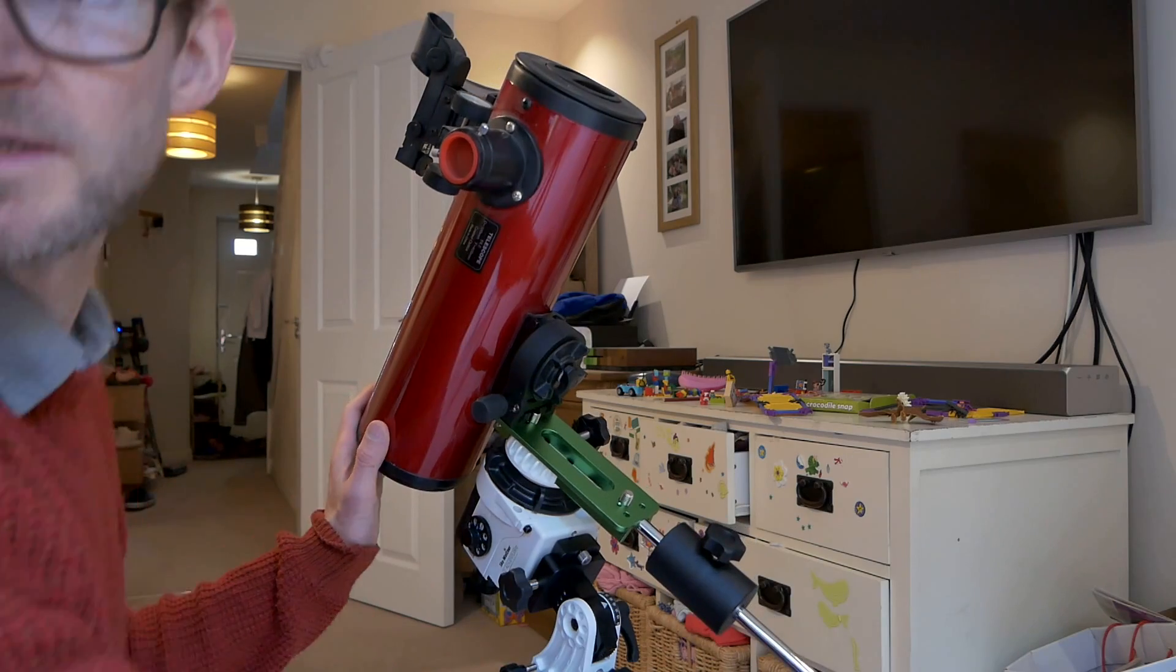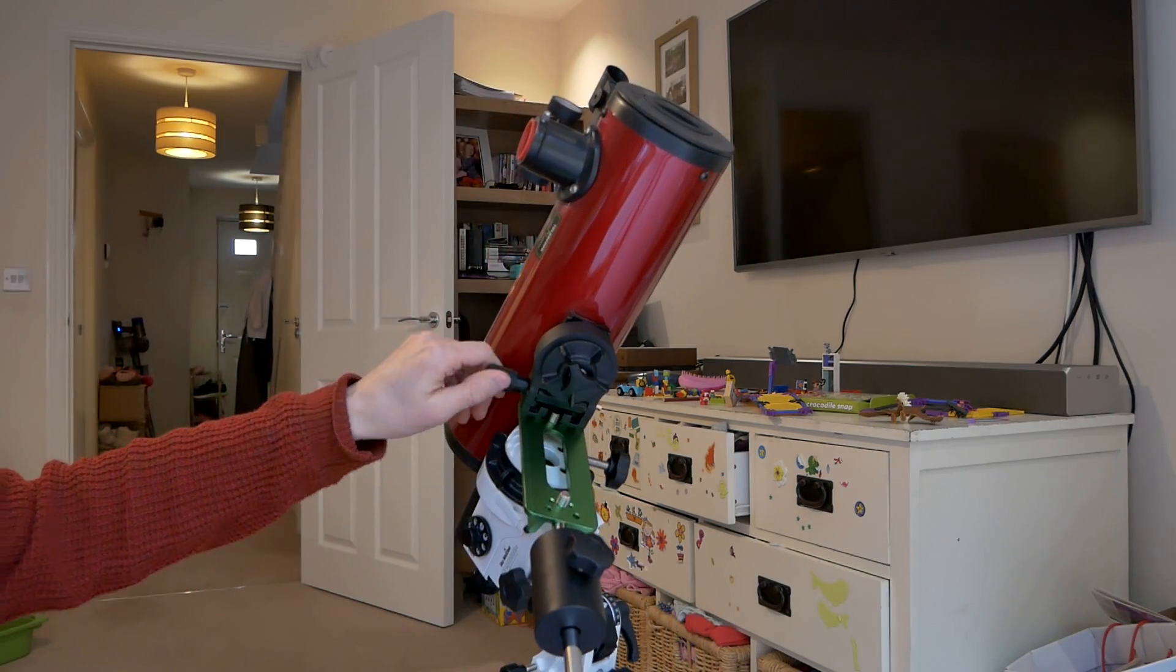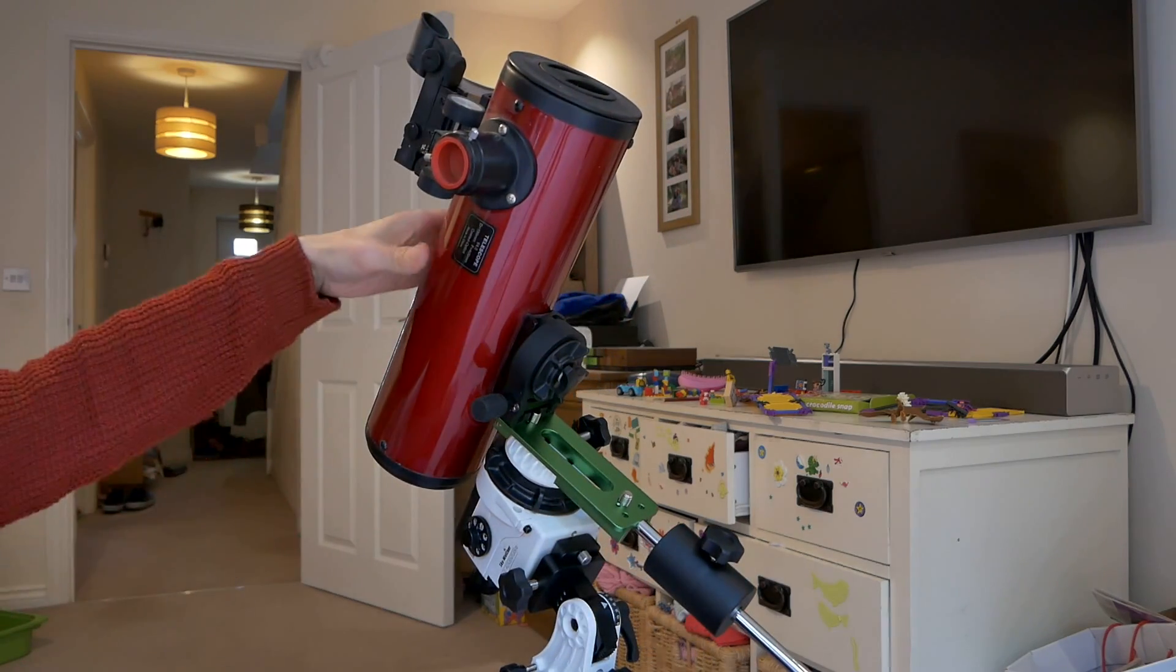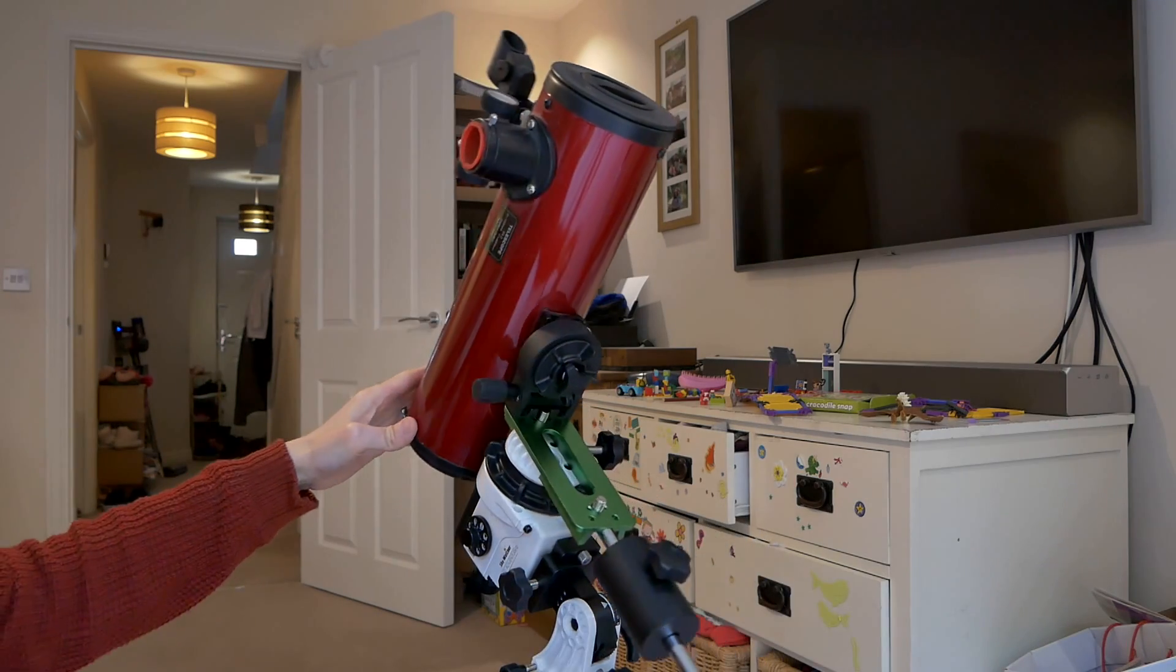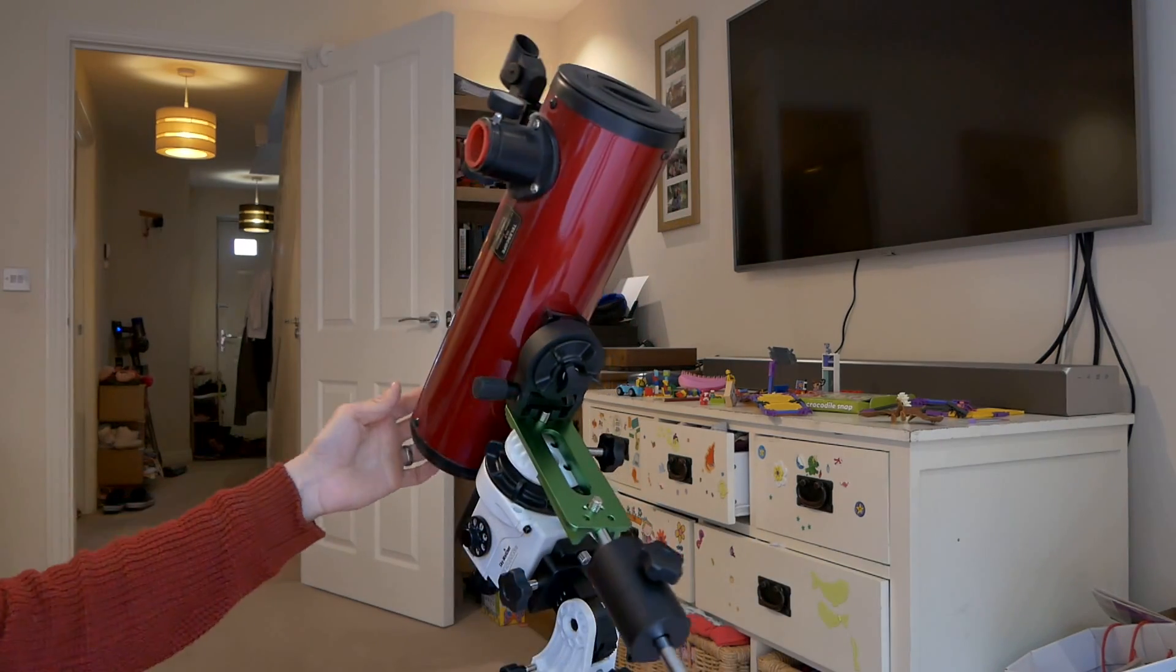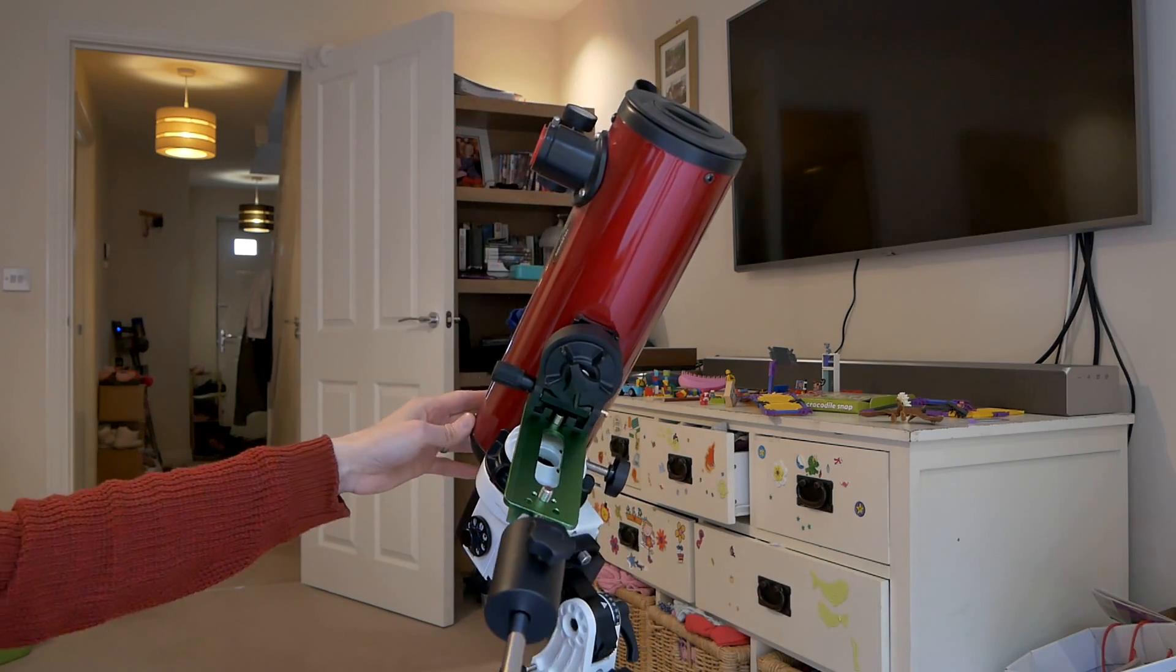I've switched over to the Heritage 100P. Before placing it on the Star Adventurer I weighed it and it comes in at 1.3 kilograms, so it's about 700 grams lighter than the Takahashi FS60. No problem for this mount at all, and I think it actually looks really good on the mount.